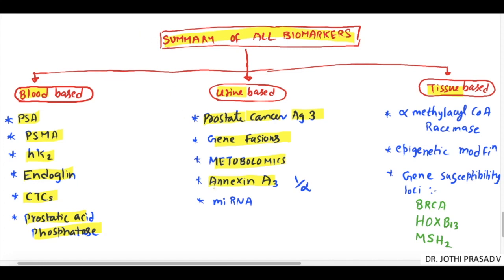Tissue-based markers include miRNA. Alpha-methylacyl-CoA racemase (AMACR) is upregulated in malignancy. Epigenetic modifications such as APC, retinoic acid receptors, and RAS mutations are also noted. Gene susceptibility loci include BRCA, HOXB13, and MSH2.